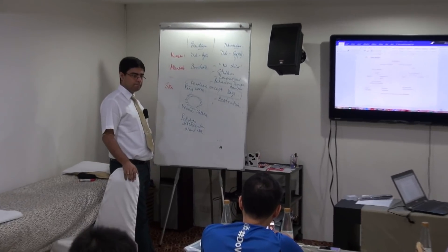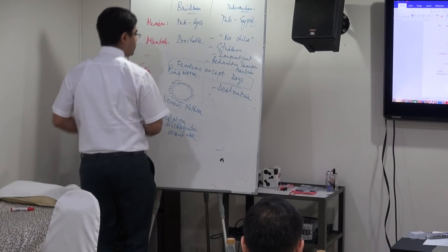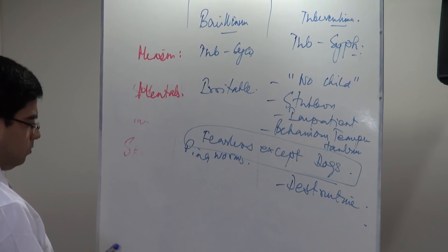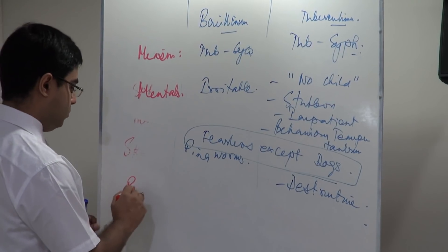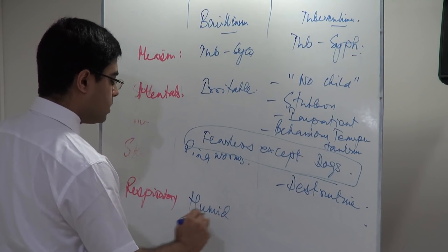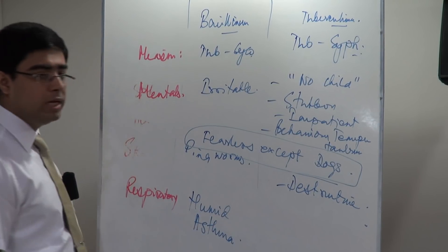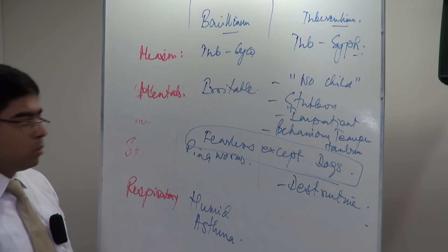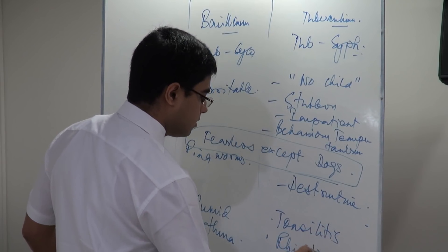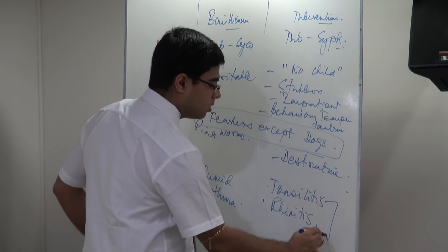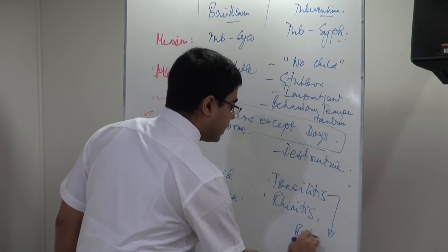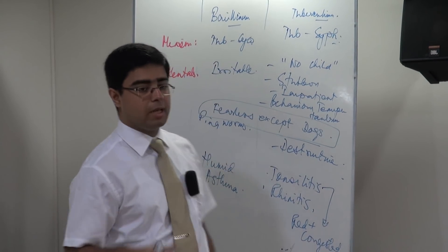Going deeper into respiratory symptoms: for Bacillinum we call it humid asthma, like Natrum sulph — a lot of mucus in the lungs, a lot of wheezing and rattling. Whereas in Tuberculinum it is more tonsillitis and rhinitis, and the tonsils look red and congested like Belladonna. That is why Tuberculinum is a follow-up of Belladonna.